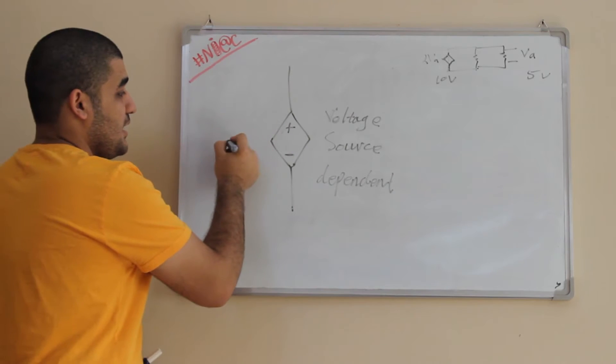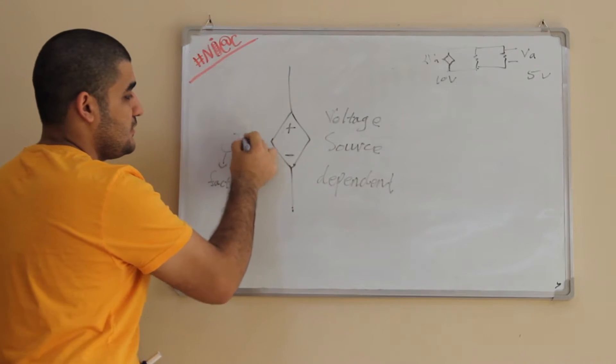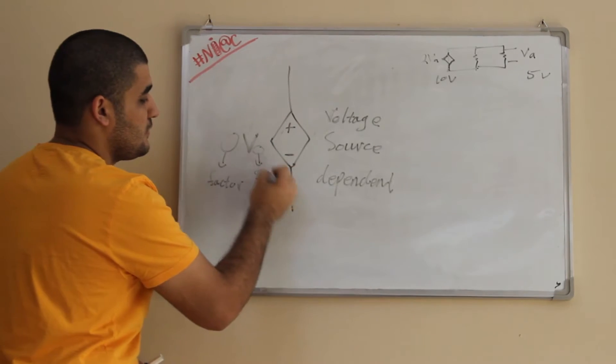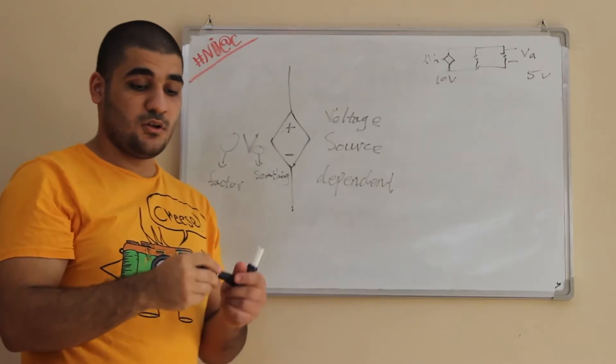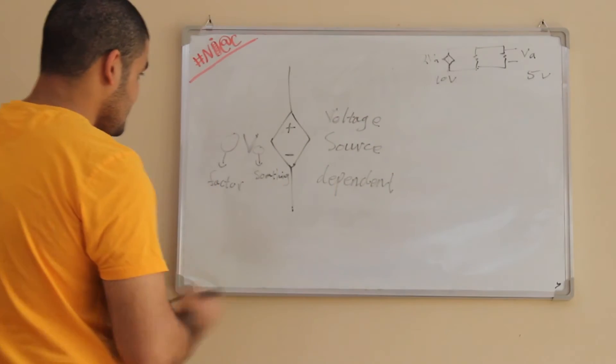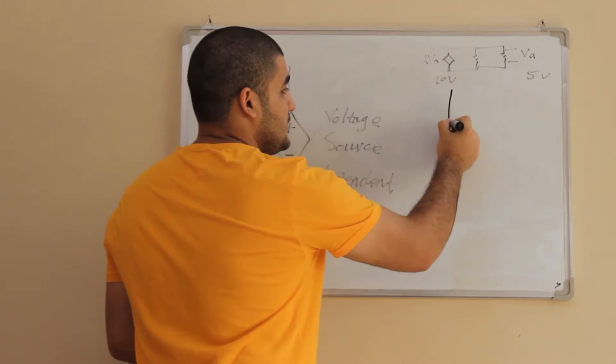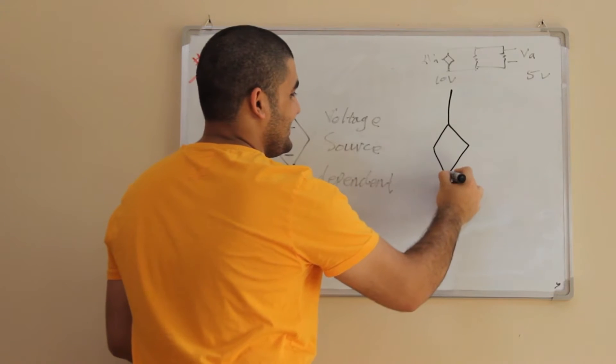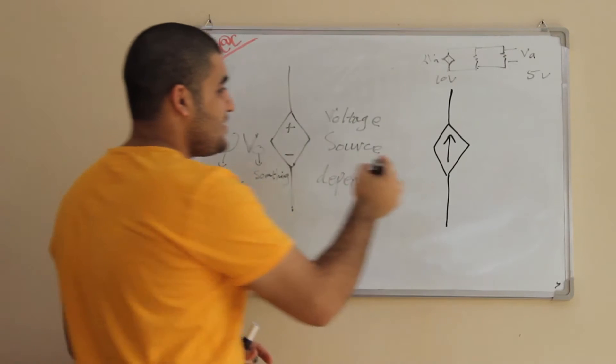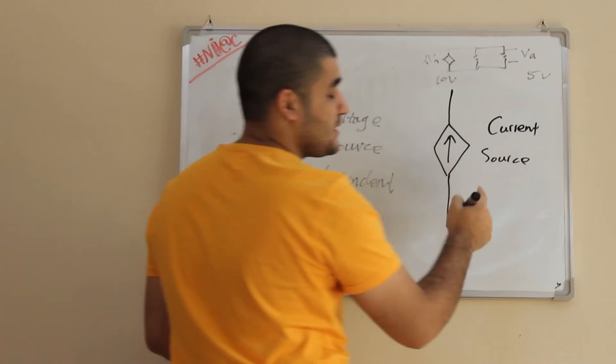Here I write a number or factor and V something. This something is another voltage on the circuits. So this is our dependent voltage source.